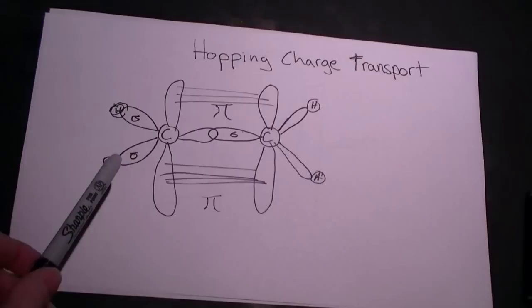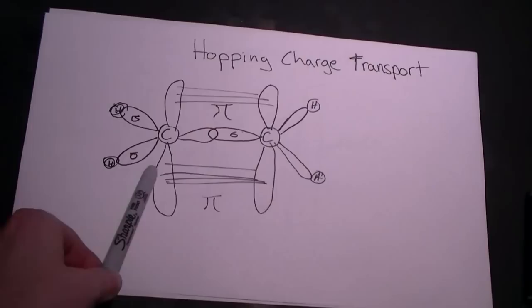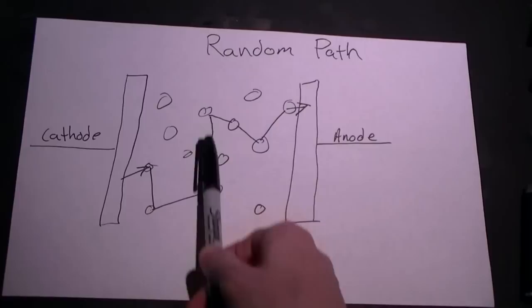Conduction in polymers is very complex. It's referred to as hopping charge transport. Charges move from molecule to molecule from overlapping pi bonds. Their path is somewhat random due to the irregular overlap of the molecules.